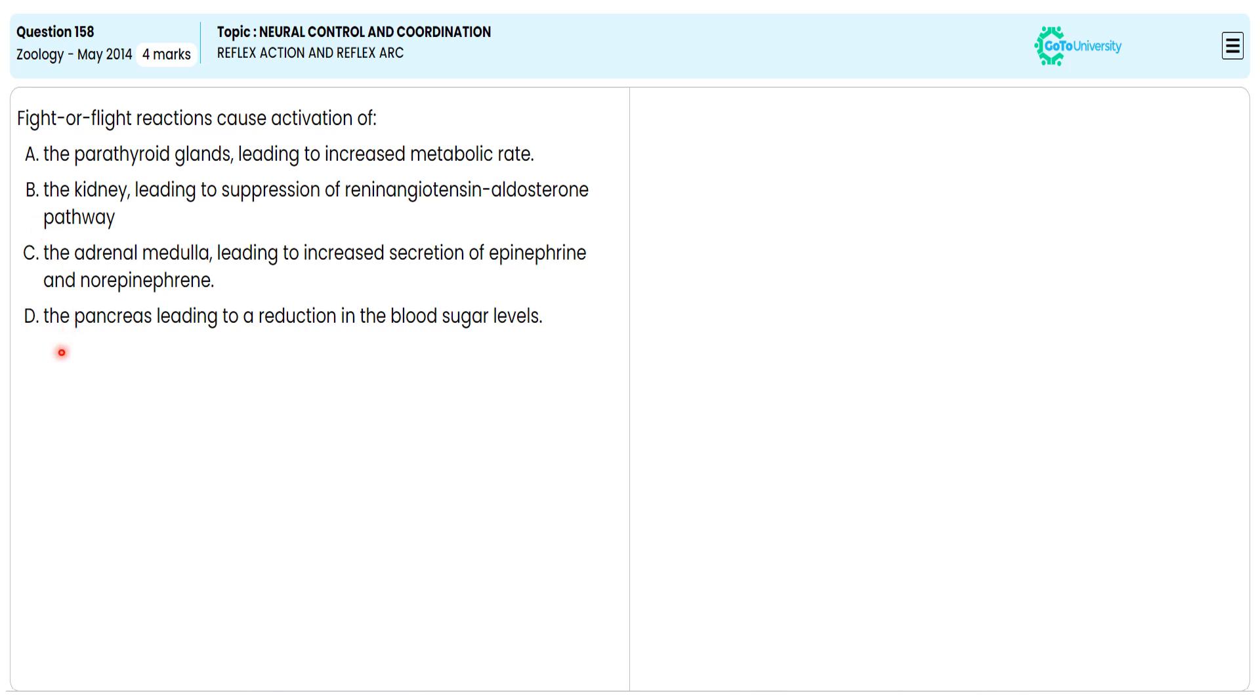Why are we avoiding option D? The pancreas produces both insulin and glucagon, so it both reduces and increases glucose levels depending on the condition, not specifically for fight-or-flight.